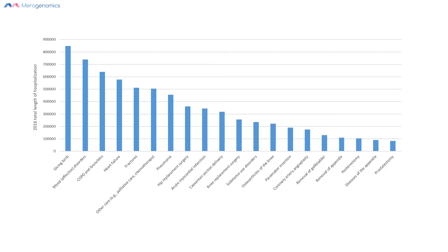In this combined graph we see the top reasons for hospitalizations that include both health conditions as well as procedures that might require Canadian patients to end up in hospital, divided by medical specialty. The top one is neurology, followed by pulmonary causes.